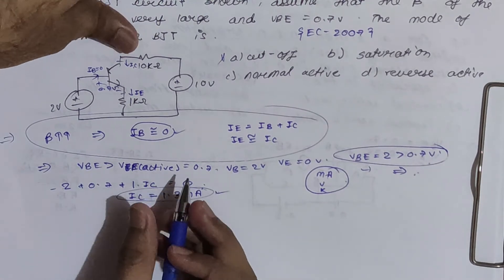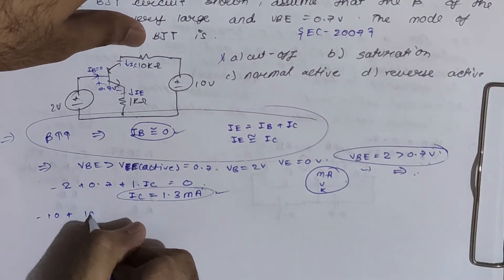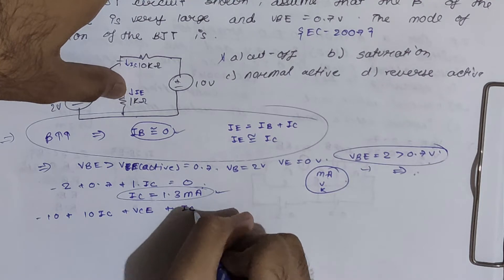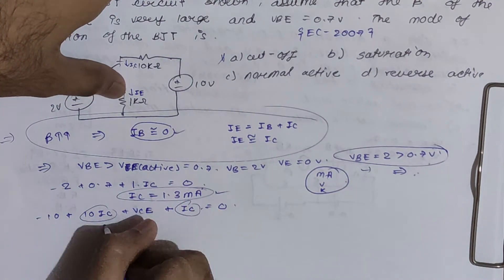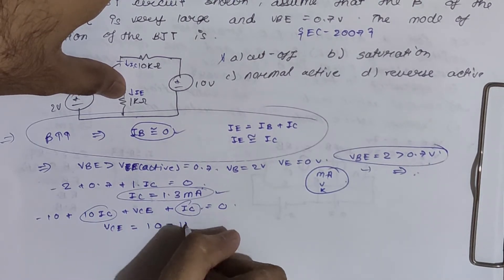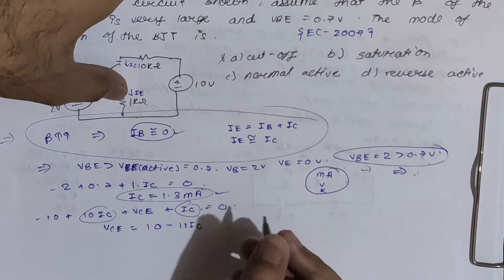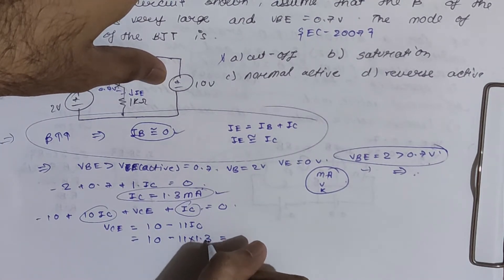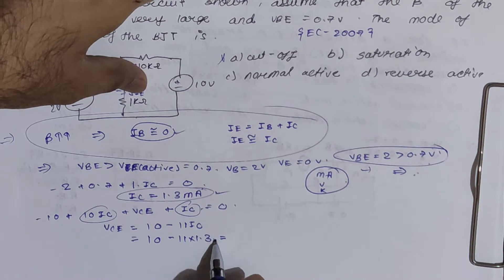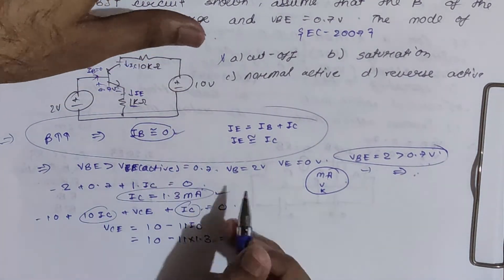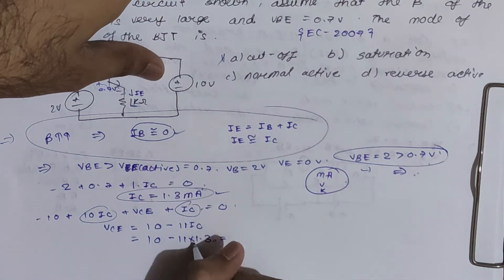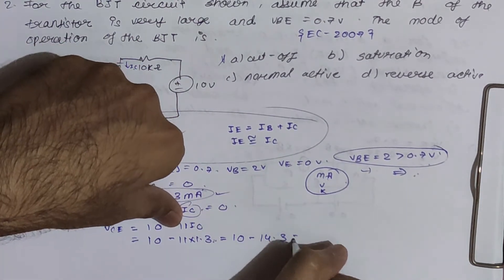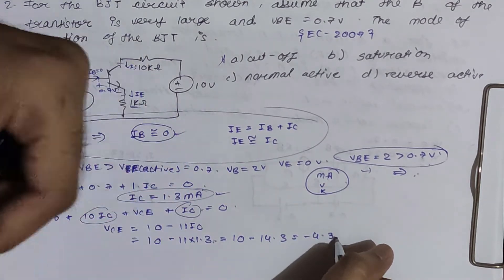Applying KVL at the output side: −10 + 10·IC + VCE + 1·IC = 0, giving VCE = 10 − 11·IC = 10 − 11 × 1.3 = 10 − 14.3 = −4.3V.